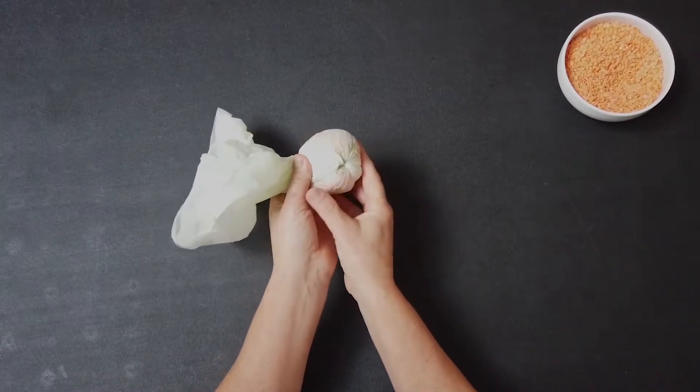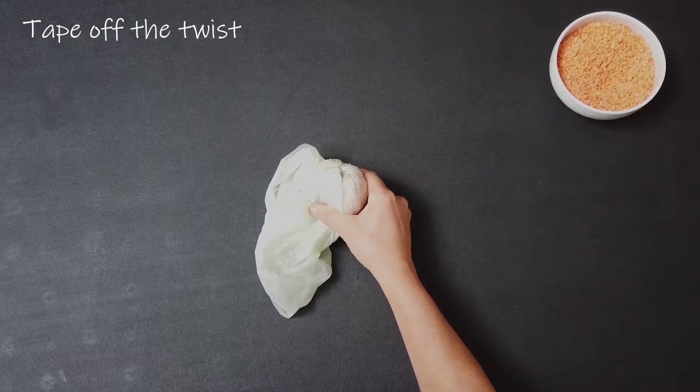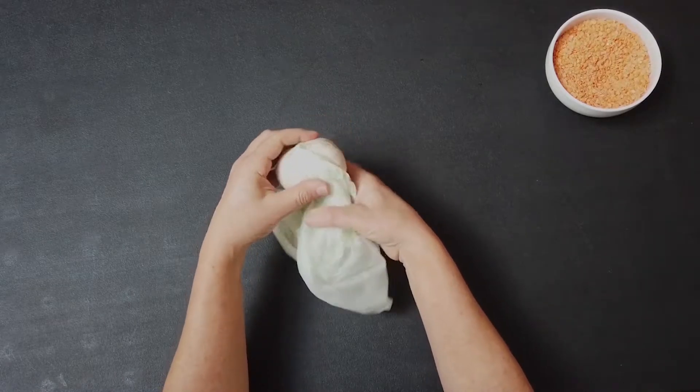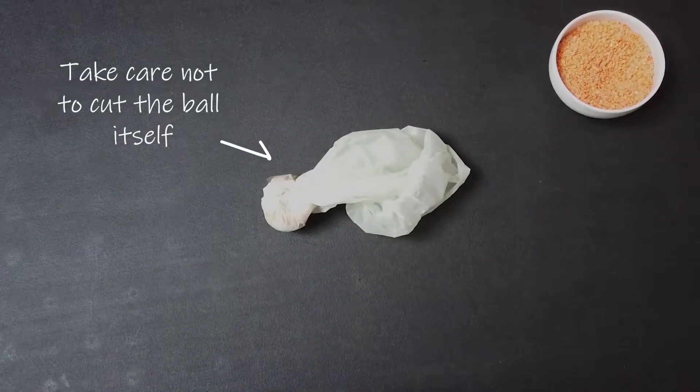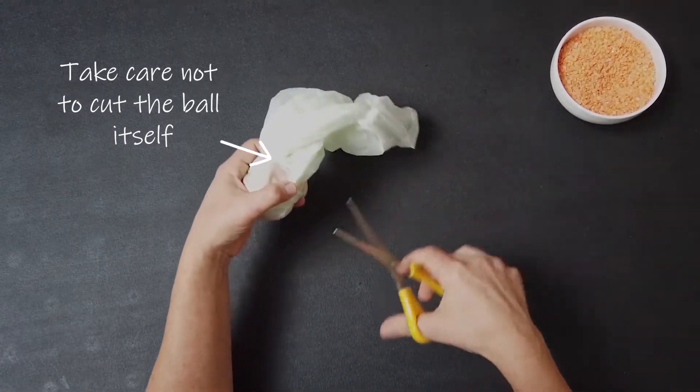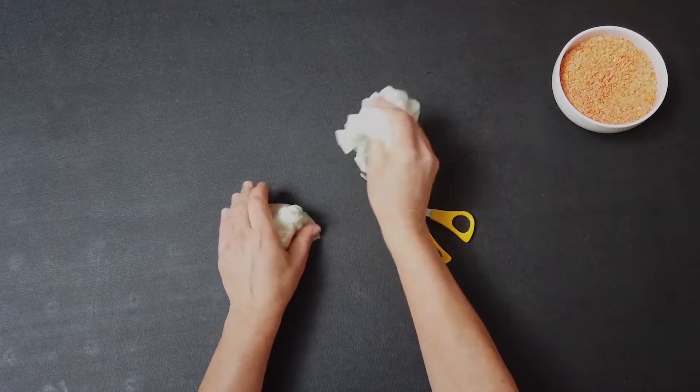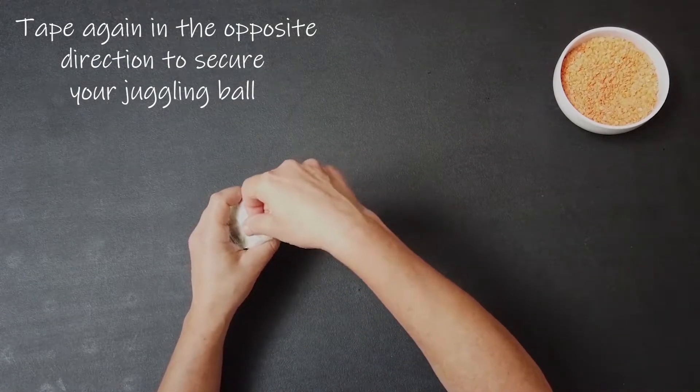This is where your sellotape comes in. You can take a piece of sellotape and tape off the twist. Take your scissors. Cut off the excess bag, making sure you're not actually cutting the bag itself. Just cut off the extra bit.